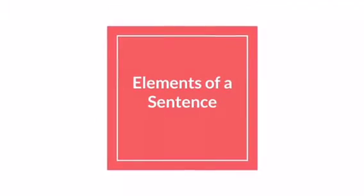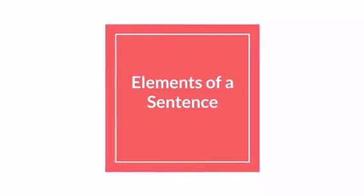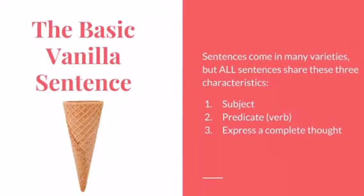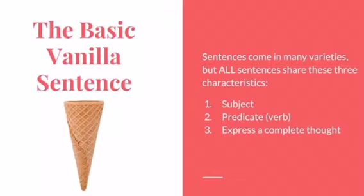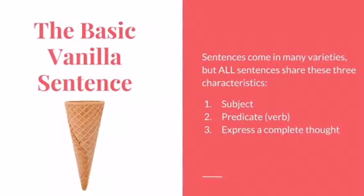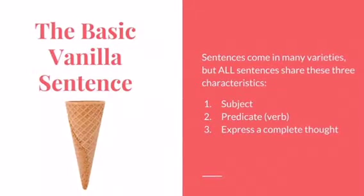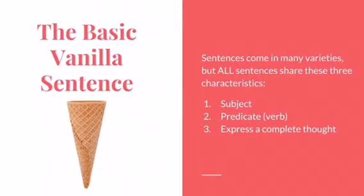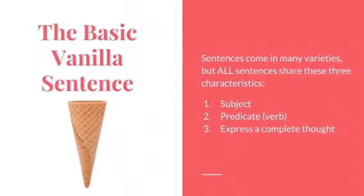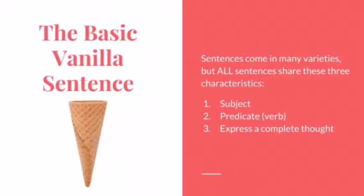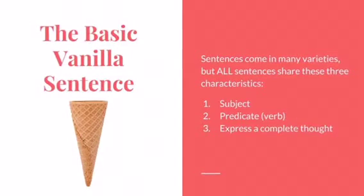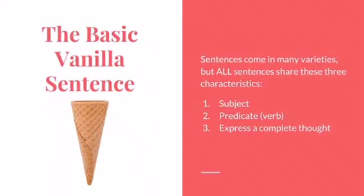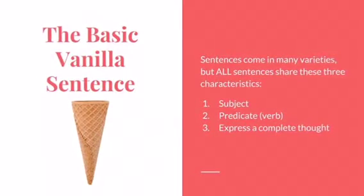Today we're going to learn about elements of a sentence. Sentences come in many varieties, but all sentences share these three characteristics. First, a subject. Second, a predicate, or in other words, a verb. And third, they express a complete thought.